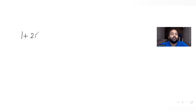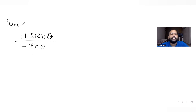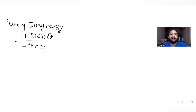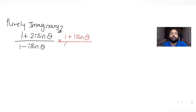So we write the expression (1 + 2i·sinθ) / (1 − i·sinθ), which is given as purely imaginary. To simplify this, we need to get rid of the imaginary part from the denominator. To do that, we multiply by the conjugate of the denominator, which is (1 + i·sinθ), in both numerator and denominator.